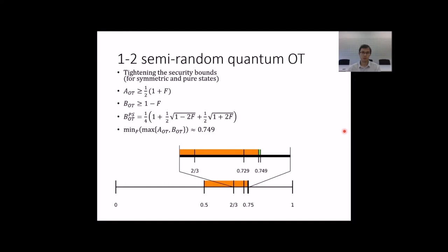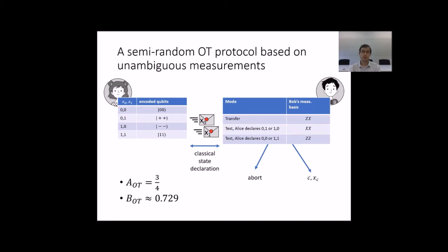It is like the previous state-of-the-art protocol, but our protocol is easier to implement and has lower cheating probability for the second party. Previously, both parties could cheat with 75% probability, while in our case it is 75% and 73%. We introduce a specific protocol for semi-random oblivious transfer. This protocol is based on unambiguous measurements.